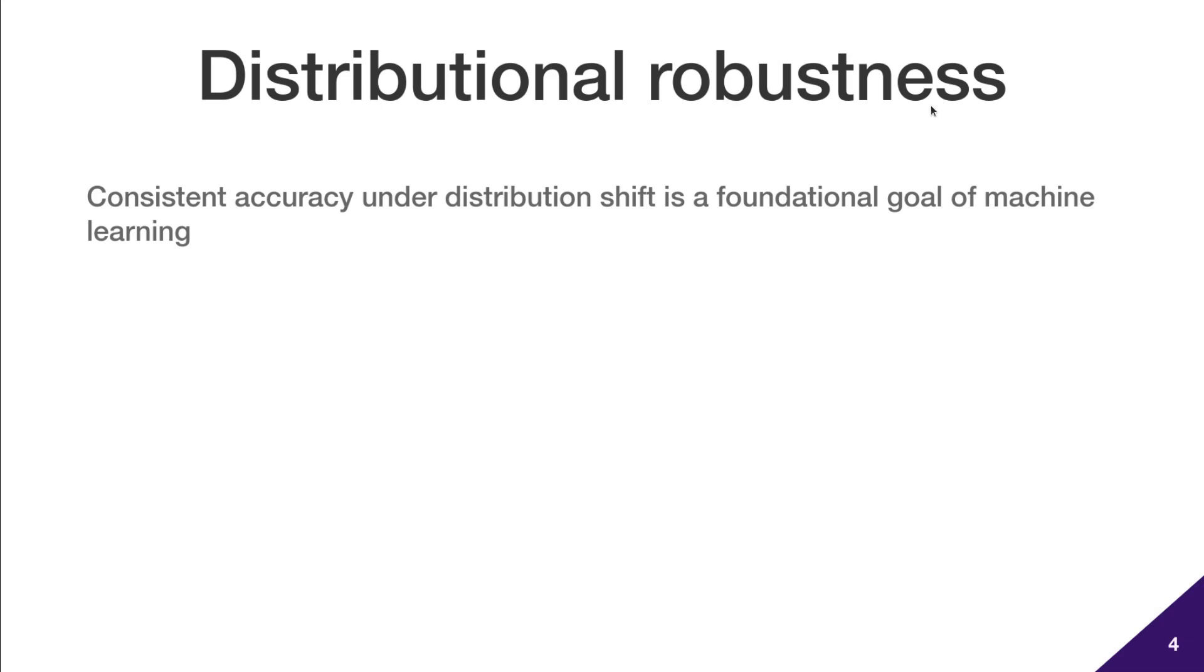One of the foundational goals of machine learning is to create systems that have consistently high accuracy under distribution shift. This is critical for trust and adoption, and is especially important since the data we collect for training is typically different from the data that our models see when they are deployed in the real world.